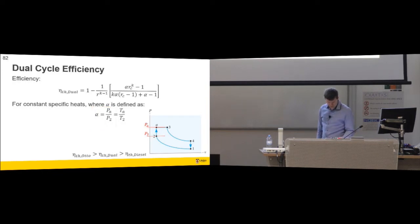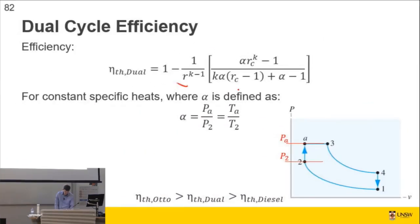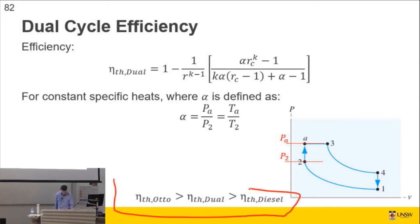We define that as the pressure increase that occurs in the isochoric sense — that's alpha. And without going through the math, we then get a thermal efficiency based only on compression ratio R, cutoff ratio RC, and the term alpha. Using those as variables, we can calculate the thermal efficiency. It's somewhere between the Otto cycle and the diesel cycle.